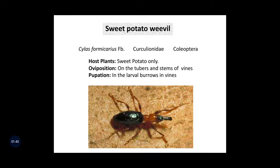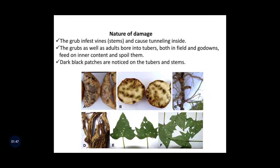The next point is how this pest damages the tubers and also the stems. The grub infests vines, meaning the stems, and causes tunneling inside. The grubs as well as adults bore into the tubers both in the field and also in the godowns, feed on the inner content and spoil them. Dark black patches are noticed on the tubers and the stems.